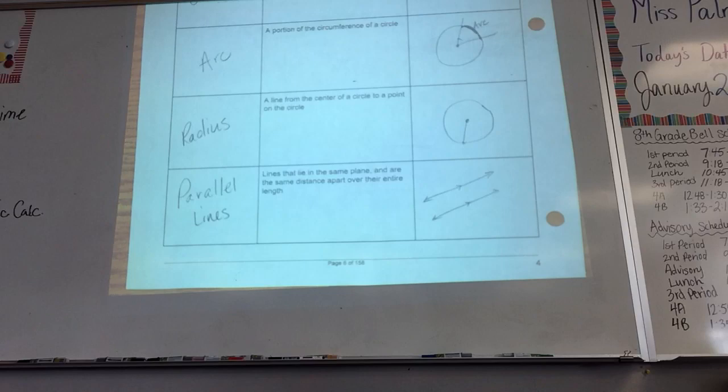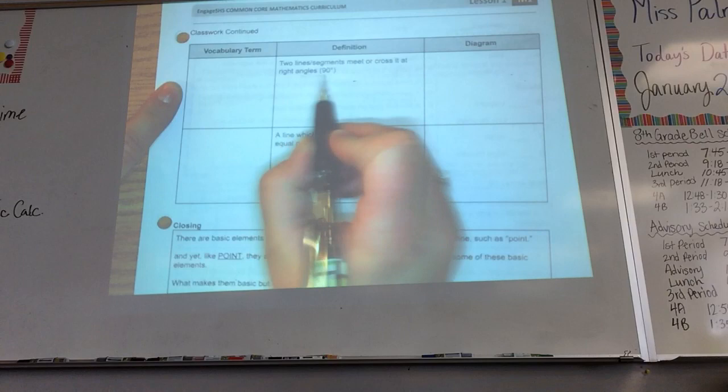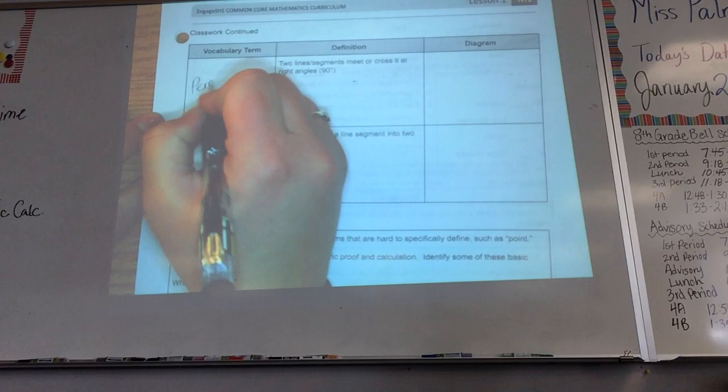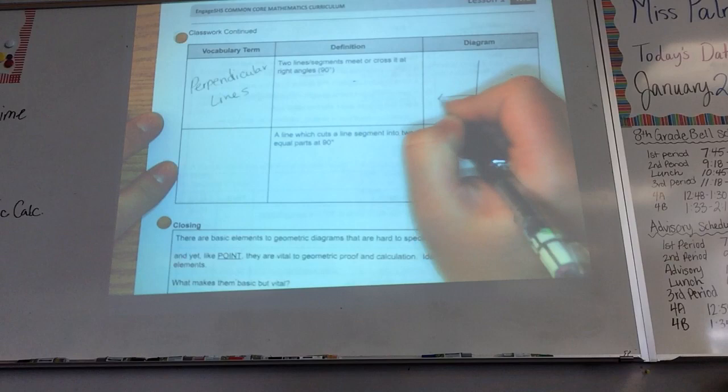Okay, and then the next page we have what? When two line segments meet or cross and make over 90 degrees, is that a right triangle? Perpendicular lines. Okay, and so we have a straight line meets another line at 90 degrees. It is perpendicular lines.